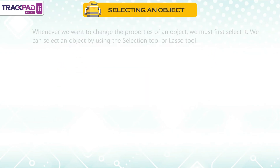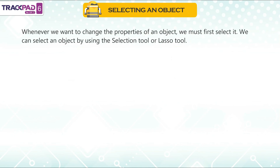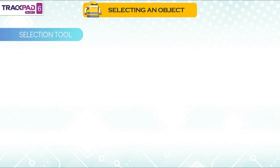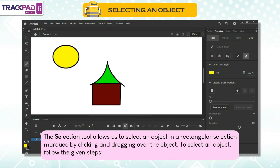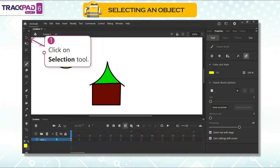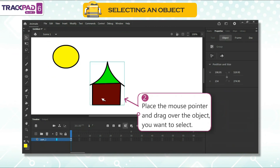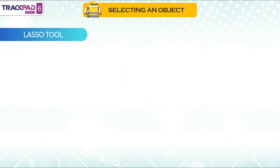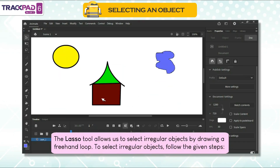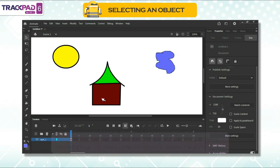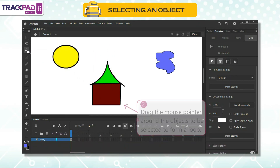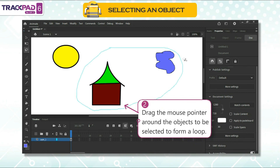Selecting an object: whenever we want to change the properties of an object, we must first select it. We can select an object by using the selection tool or lasso tool. The selection tool allows us to select an object in a rectangular selection marquee by clicking and dragging over the object. To select an object, follow the given steps. First, drag the mouse pointer around the objects to be selected to form a loop.